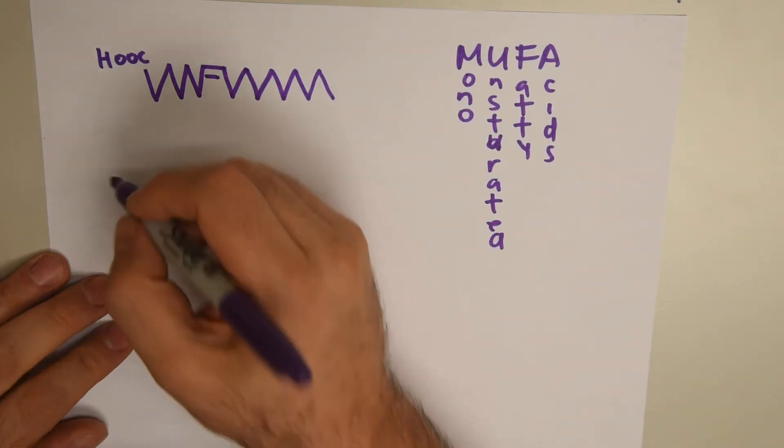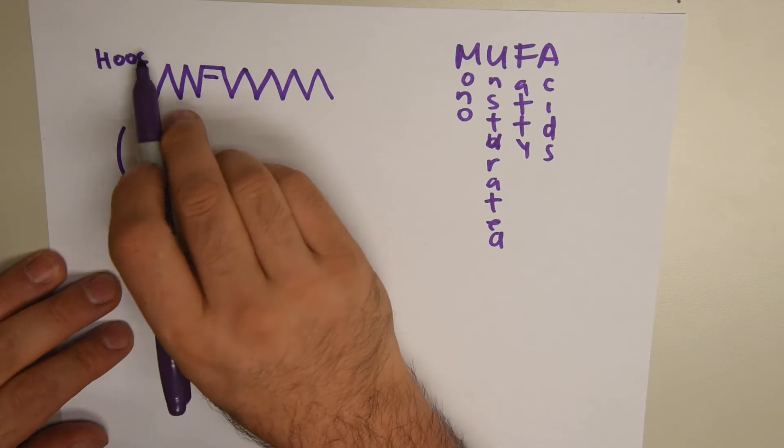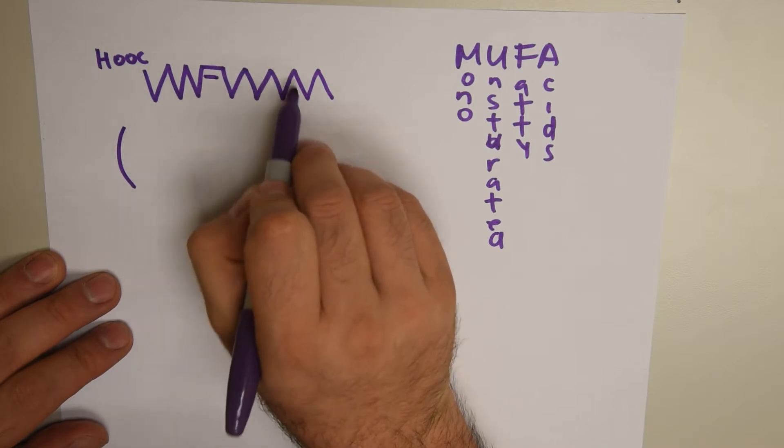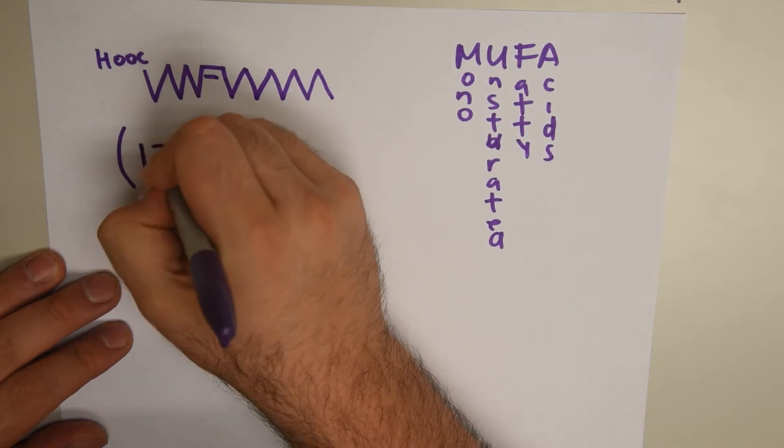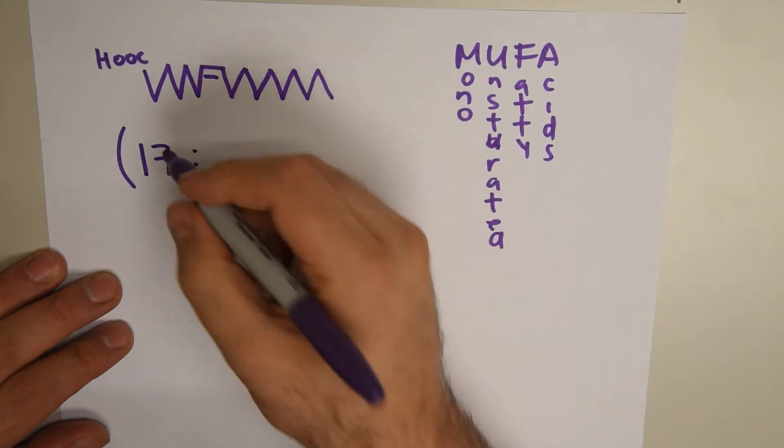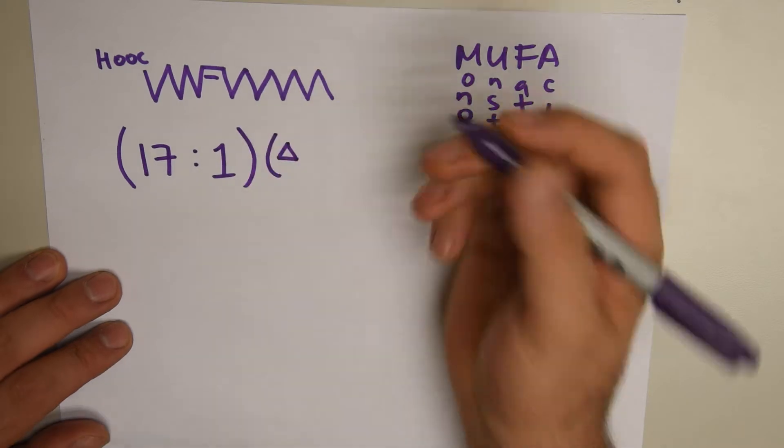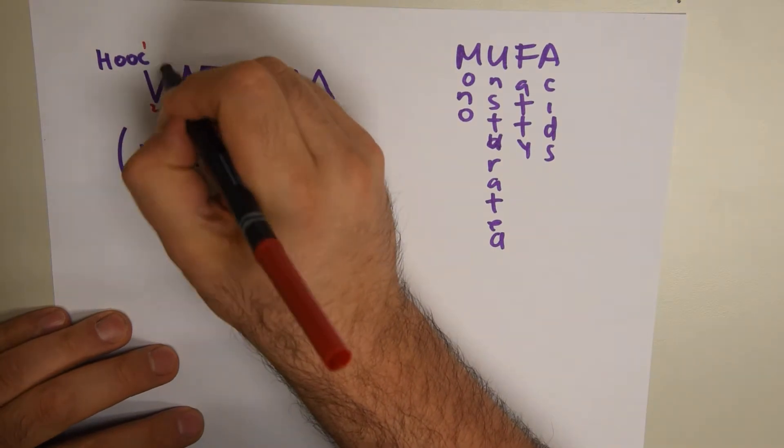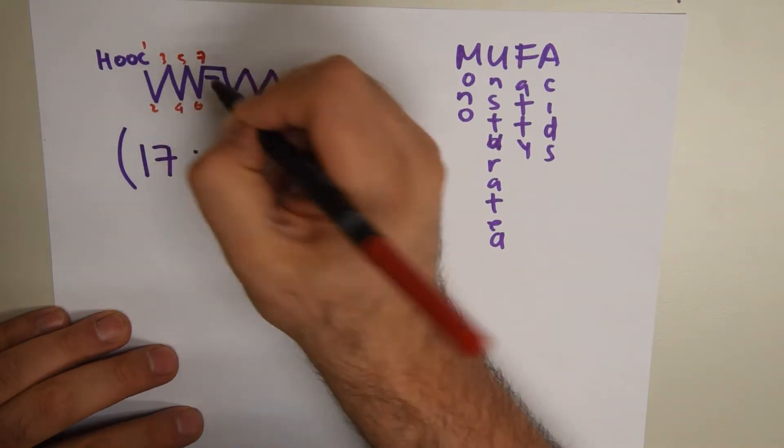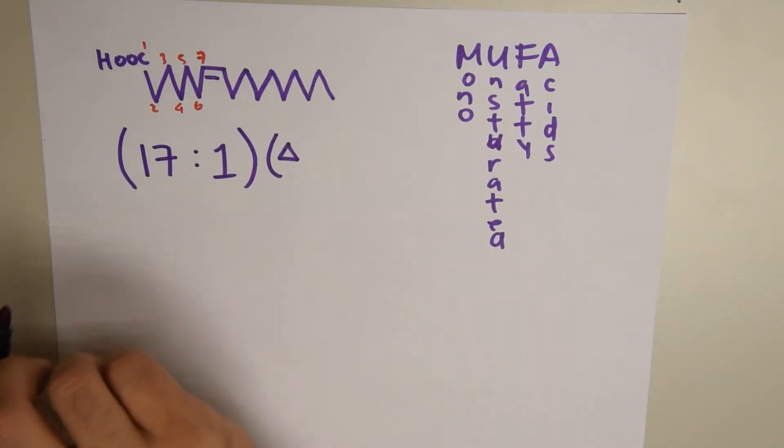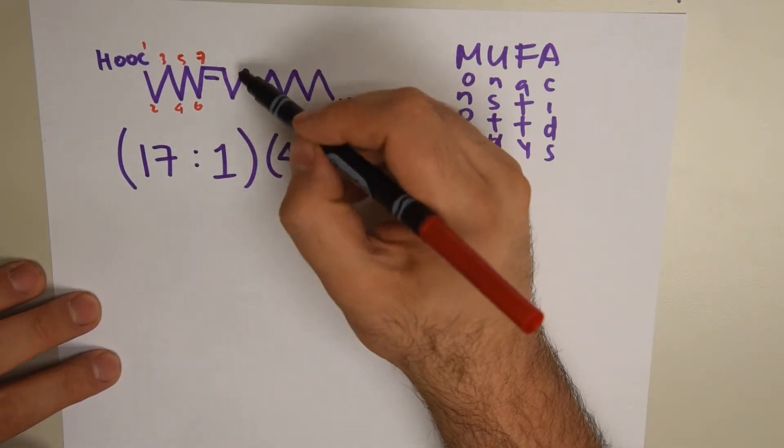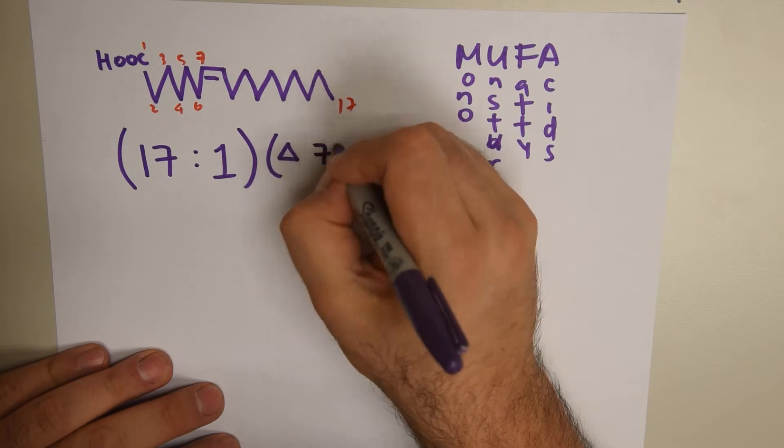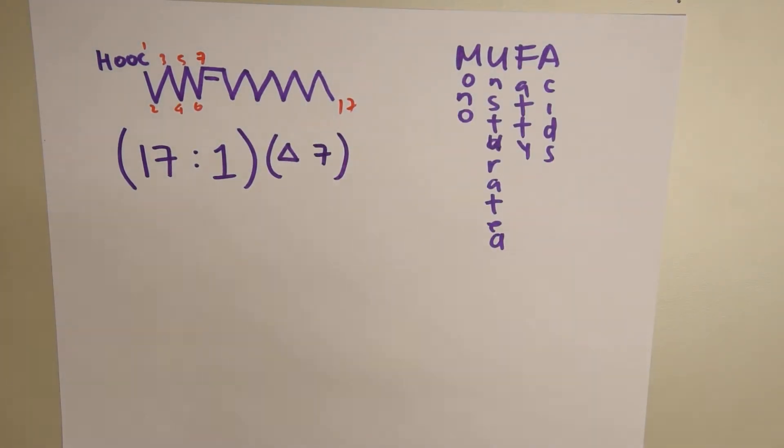How do we do this in notation? We take parentheses and count. This is the first carbon: 1, 2, 3, 4, 5, 6, 7, 8, 9, 10, 11, 12, 13, 14, 15, 16, 17. So 17 carbon atoms, colon, how many double bonds? One. Then we write a little triangle to show where the inflection of this acid is. We count 1, 2, 3, 4, 5, 6, it's at 7. And we write a 7 to indicate our double bond is at number 7.